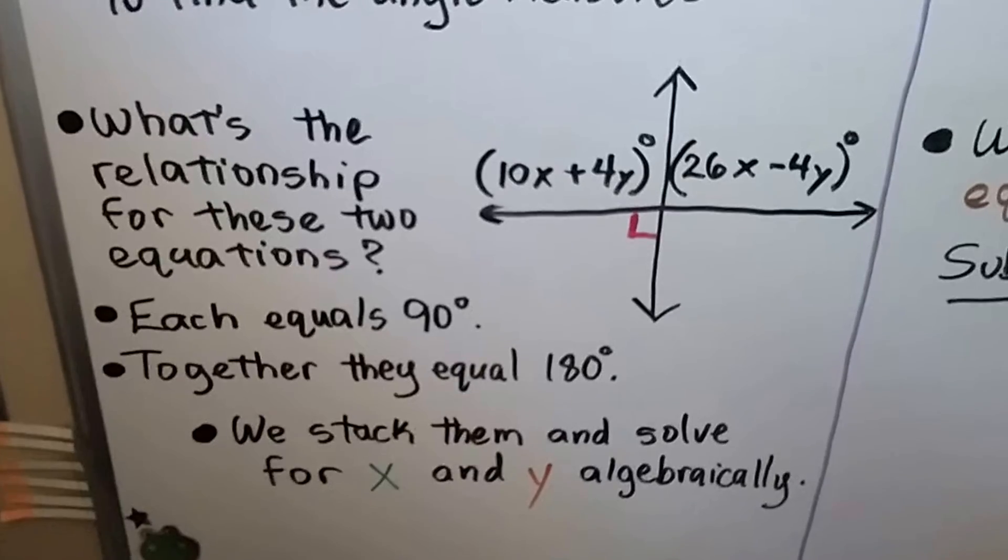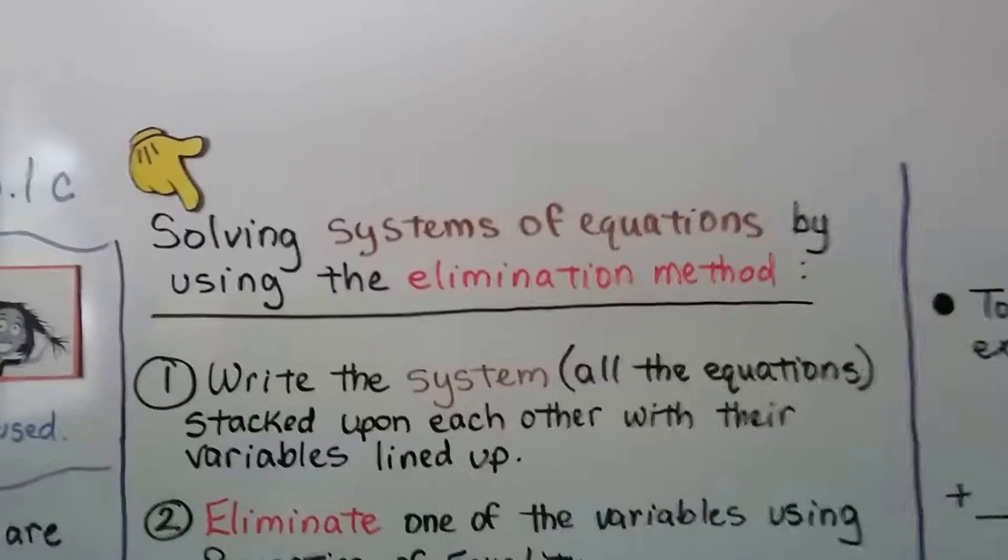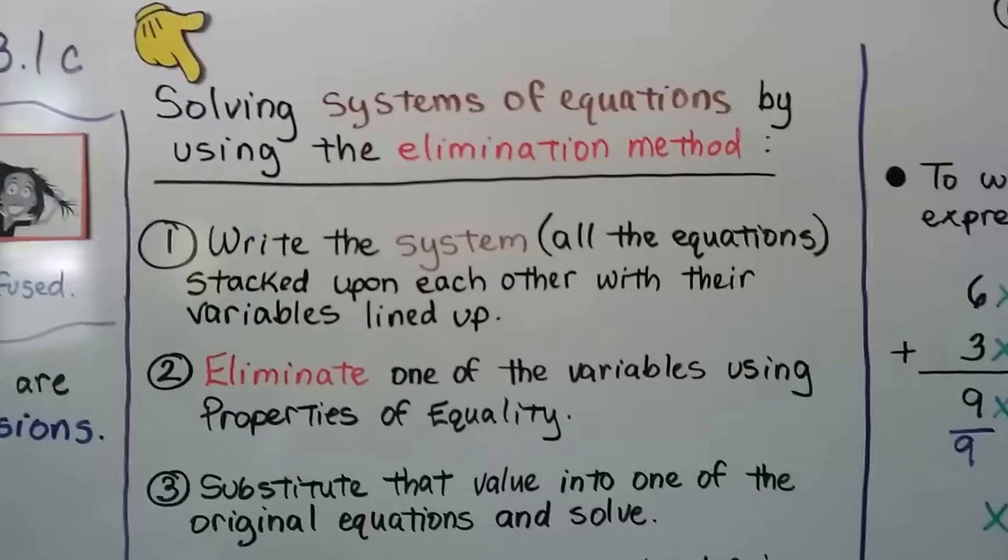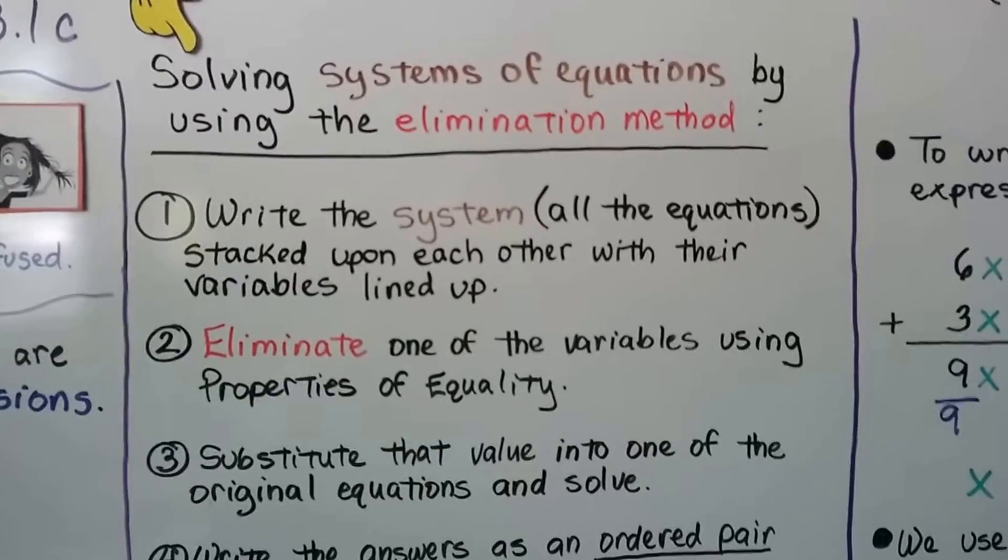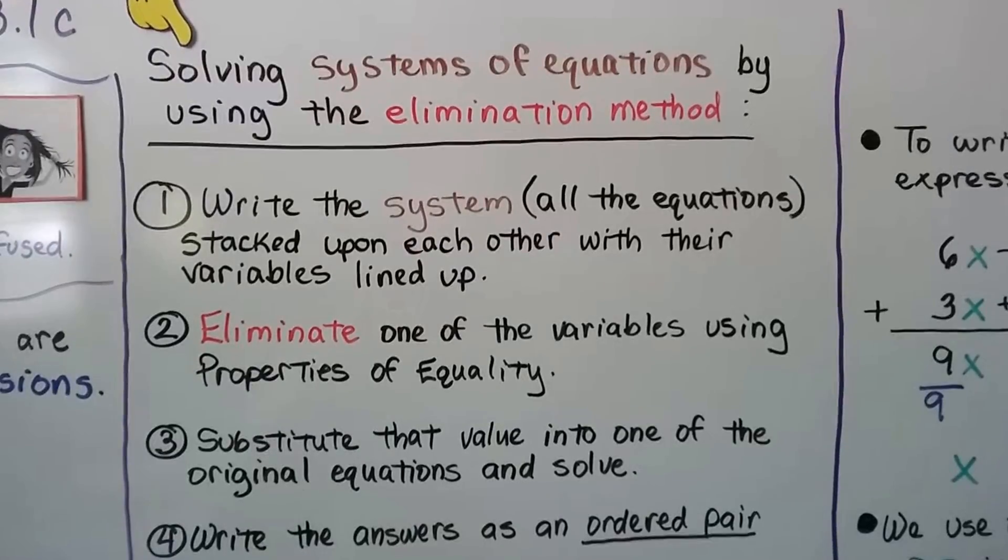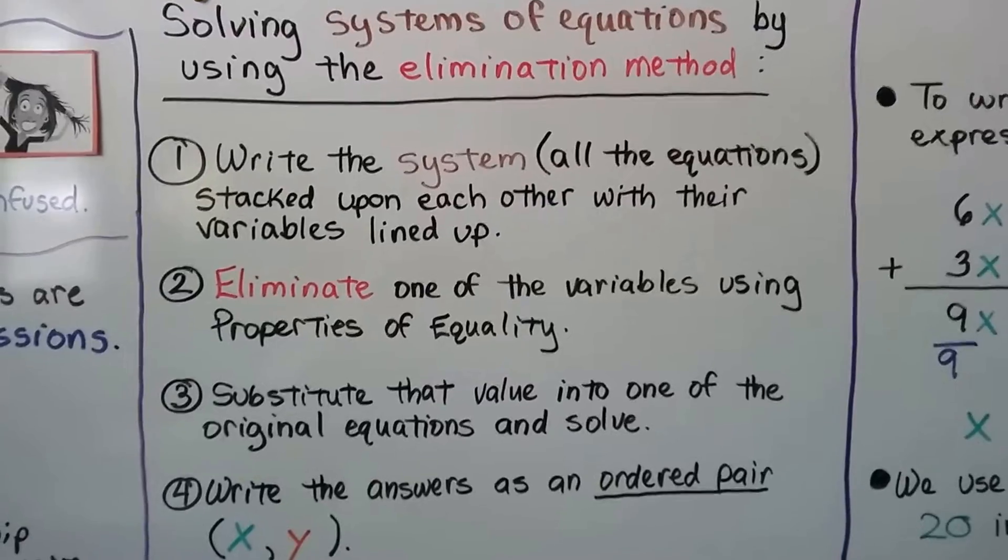We stack them and solve for x and y algebraically. So, here are the steps for solving systems of equations by using the elimination method. The first thing we do is write the system, that's all the equations, stacked upon each other with their variables lined up. Number two, we eliminate one of the variables using properties of equality.